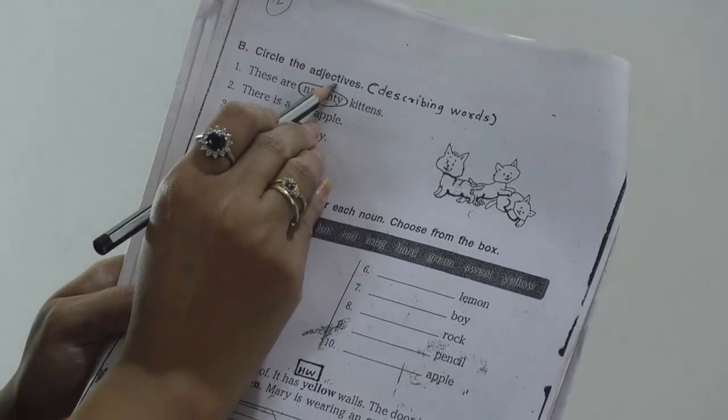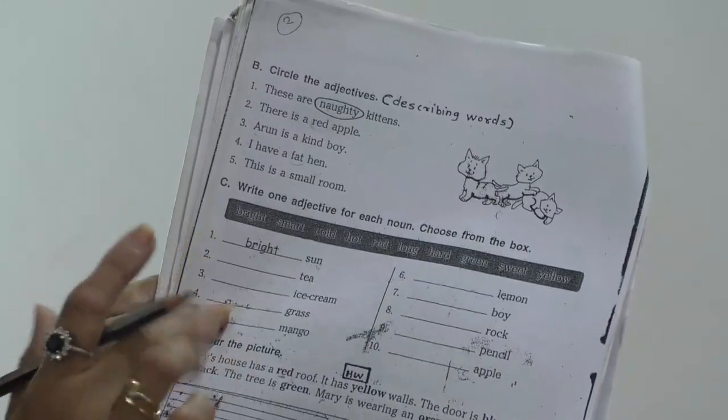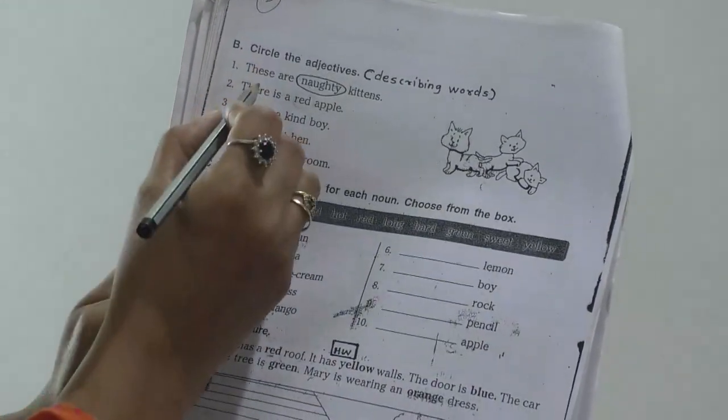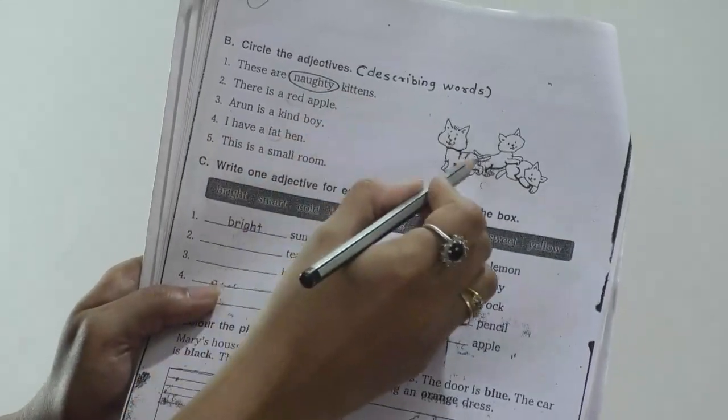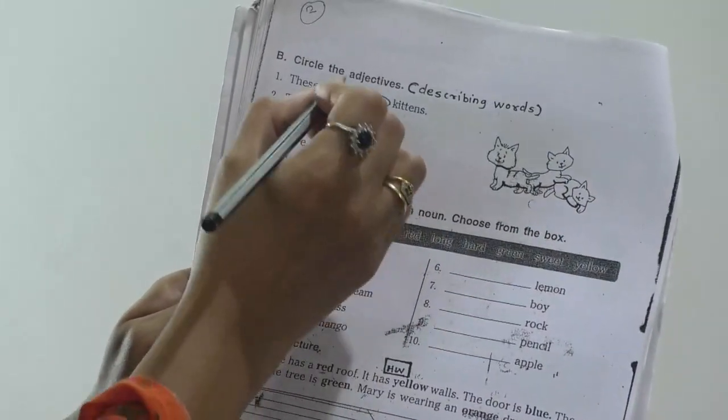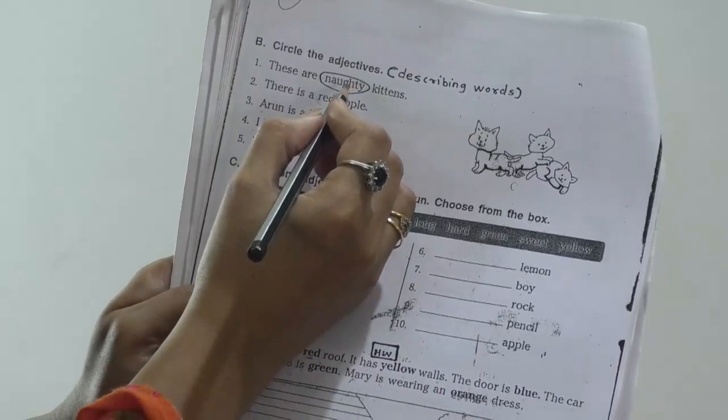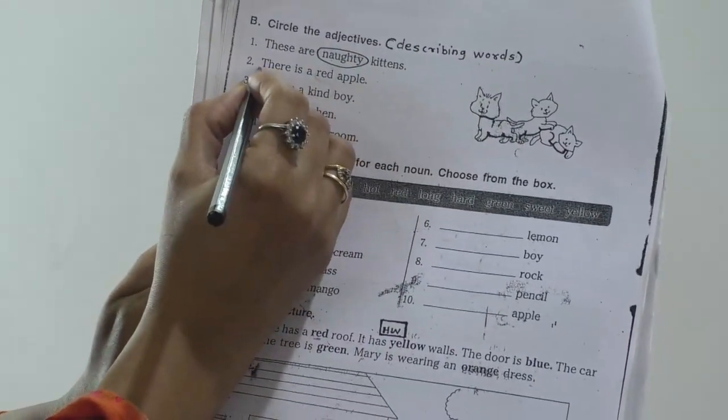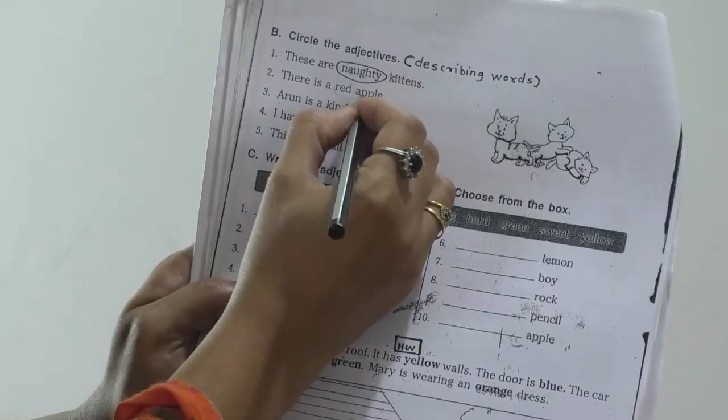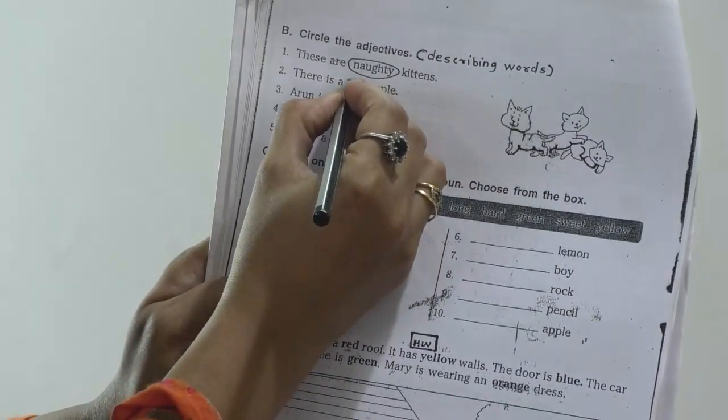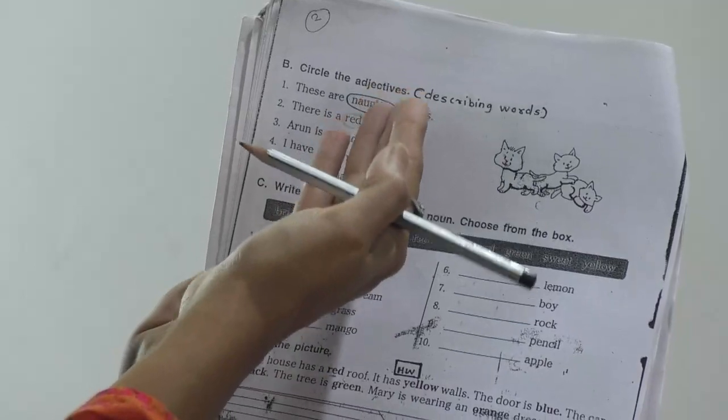Circle the adjectives means describing words. There are 5 sentences in that you have to circle the adjective. The first example is already solved. These are naughty kittens. You can see the picture. There are some kittens and how they are? They are naughty. Here they circle the adjective naughty. Next sentence is there is a red apple. Here apple is noun and describing word means adjective is red. Here they told about the color of the noun.